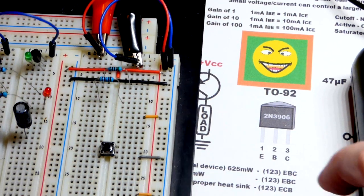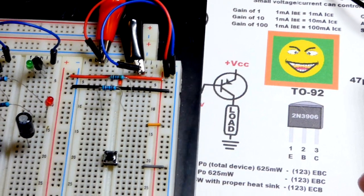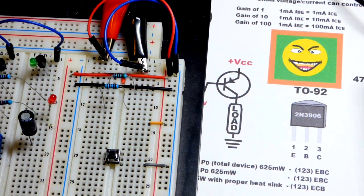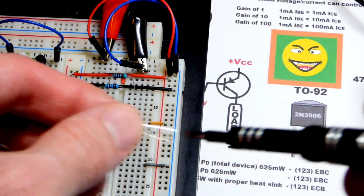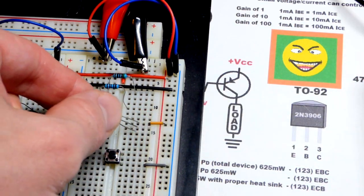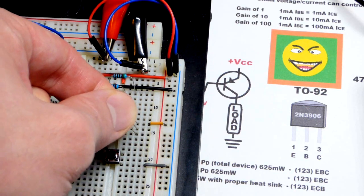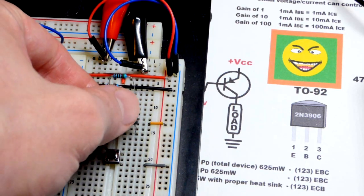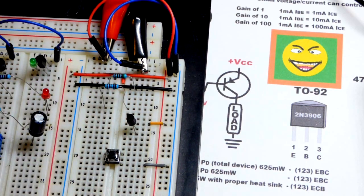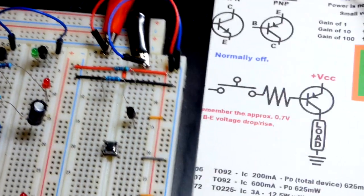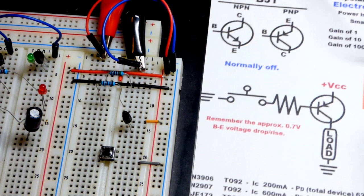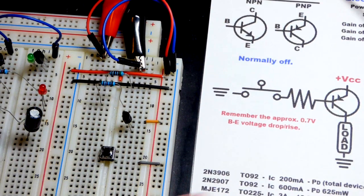Now, the emitter of the PNP bipolar junction transistor, when you're going to use it as a switch, goes directly to the positive rail. So the top pin there, I have an orange jumper right there. We will put that directly to the positive rail. And before we do the load, let's do the switch right here. You can see here, we got the switch and a resistor.